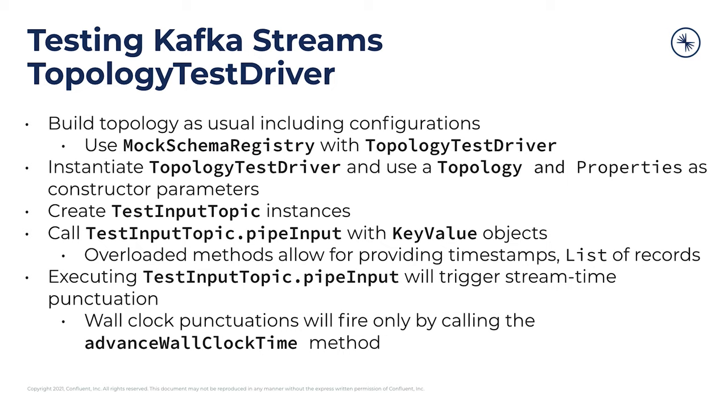Now it's on you to create some test input topics and some input. The test input topic is what you will create and use with the topology test driver. You just create that and then you can pipe input with the test input topic pipe input method. All you need to do here is send in normal key-value objects — these represent the records that you would have coming in from a broker. There are various overloaded methods that allow for writing timestamps, lists, and more general convenience methods. But fundamentally you're just writing records as you would to a normal topic, but instead to this test input topic.